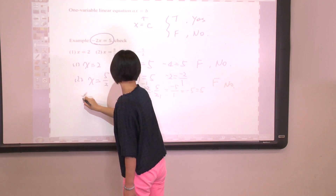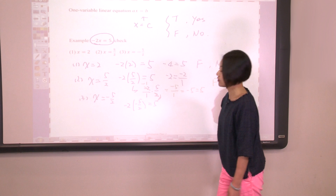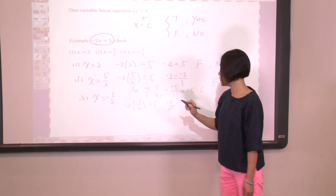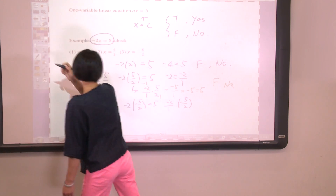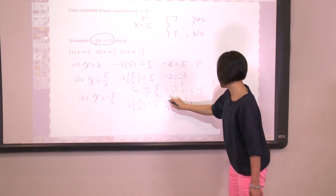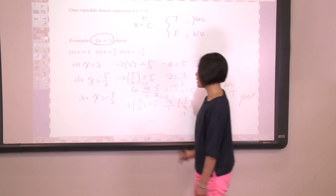Finally, let's check the last one: x equals negative 5 over 2. Plugging back in, the left-hand side is negative 2 times negative 5 over 2. Rewriting as negative 2 over 1 times negative 5 over 2 and reducing by dividing 2 from both top and bottom gives us negative 1 times negative 5, that is 5 over 1, which is 5. This equals the right-hand side of 5.